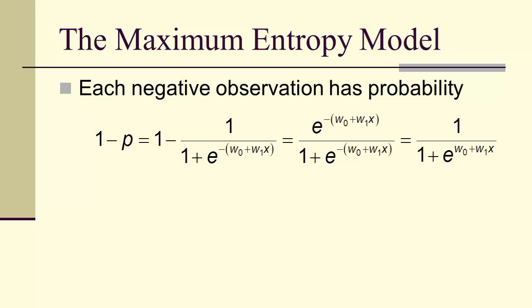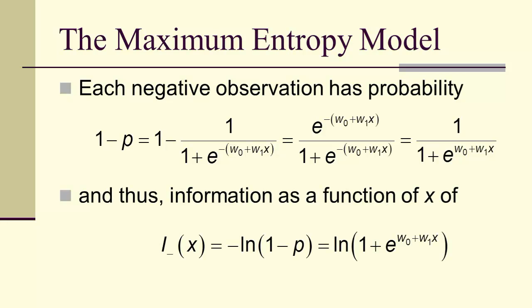And we get this simple form. And so therefore the information of a negative observation as a function of x is the natural log of 1 plus e to the (w0 plus w1x). Notice there's no negative in the exponent in this case.